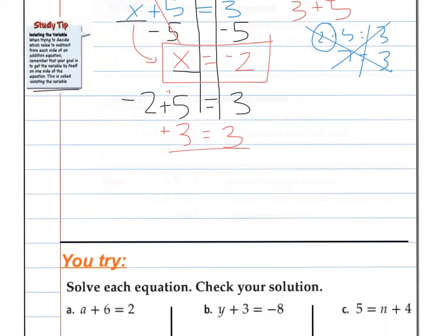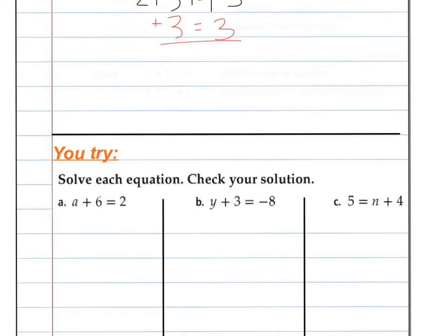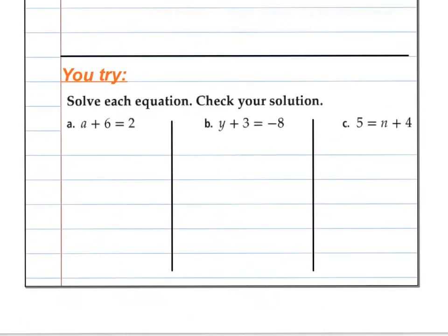This is all about the inverse operation. So we're undoing what's been done. So if I have a, and I add 6, and I get to 2, I want to say, what did I have with a before I added 6? So I do my inverse operation. What operation undoes adding? That's subtraction. So I subtract 6, because I want 6 minus 6 is 0, to get my variable a alone.